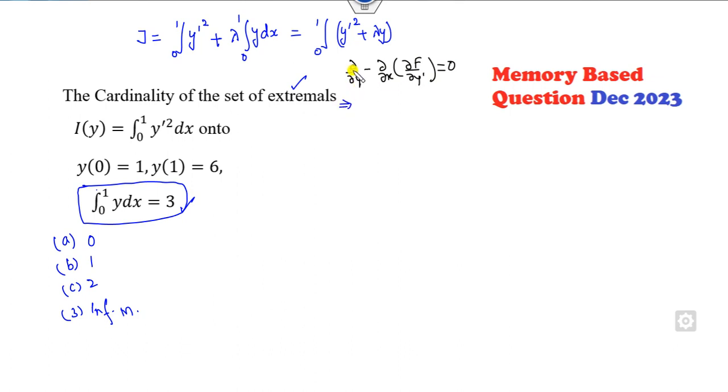Now what is that? Del f, what is the partial derivative here? What is the partial derivative? It's 2y dash. Again I can differentiate this. It's y double dash is zero. So what is the meaning of that? Can I find 2y double dash is this? I can integrate it. It's 2y dash is lambda x plus a. Again I can integrate it. It's 2y lambda x squared by 2 plus ax plus b. Got it?